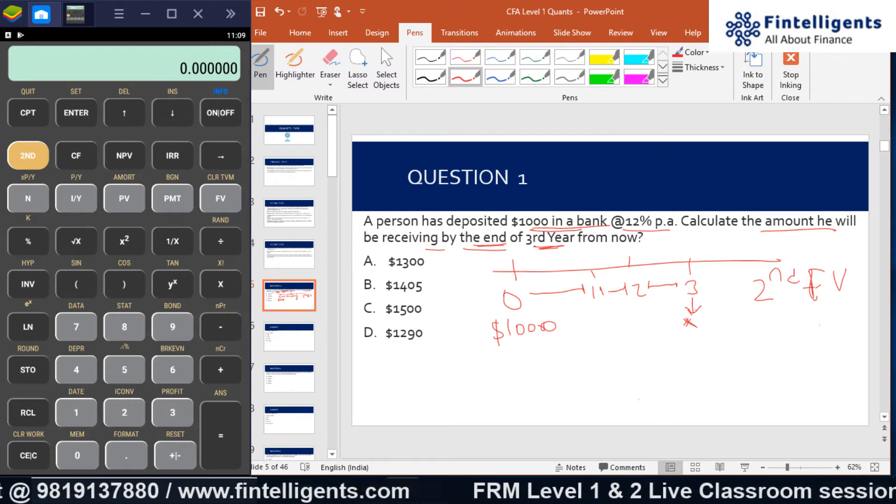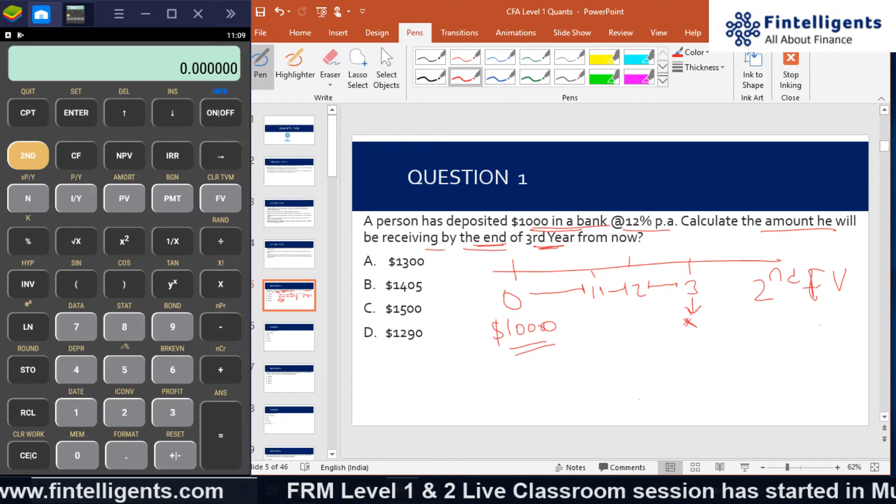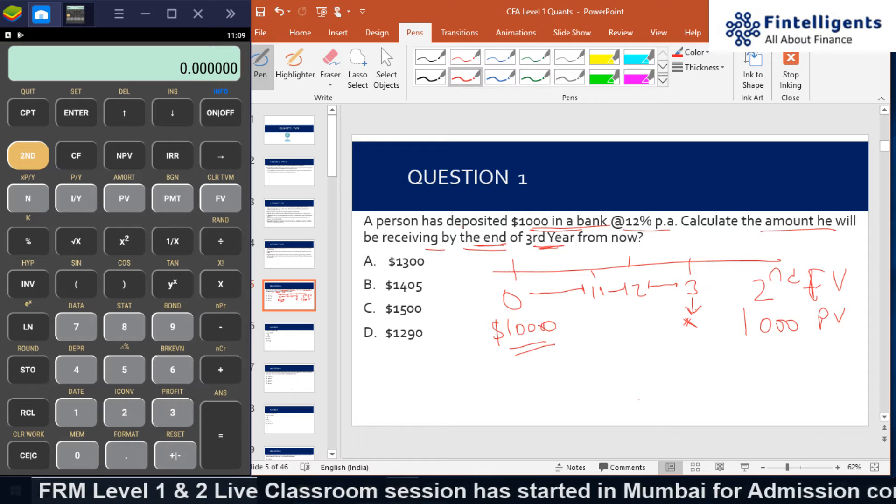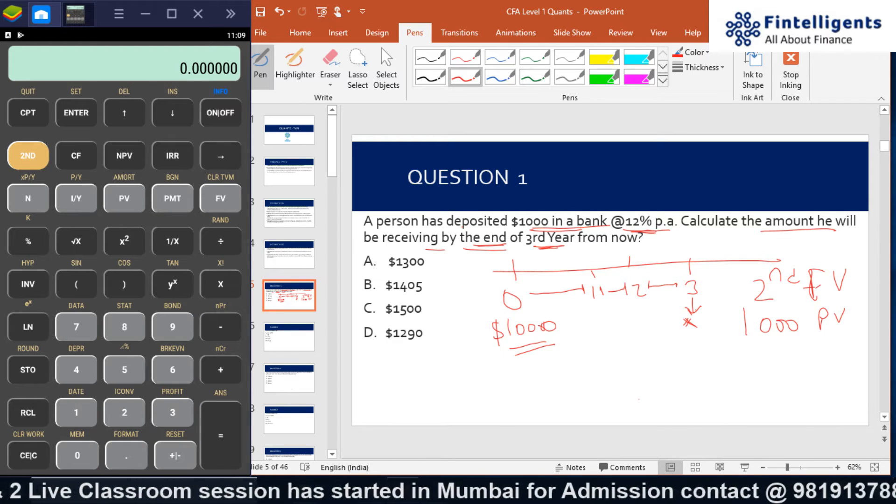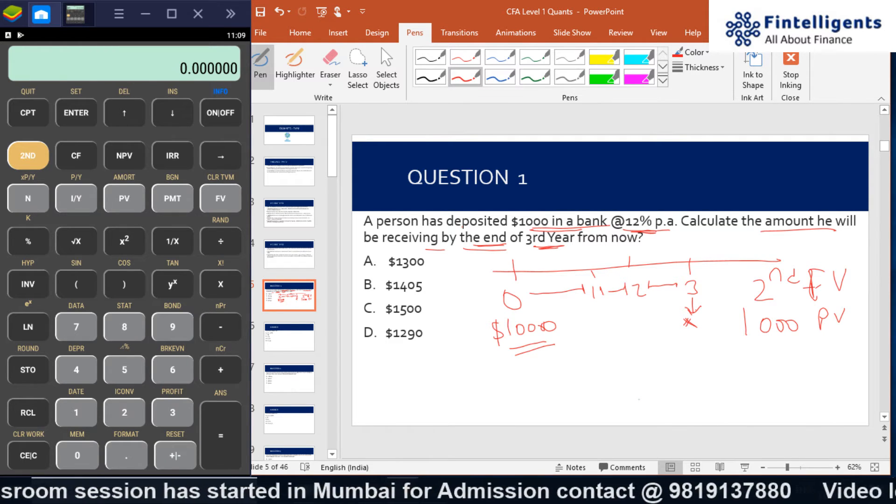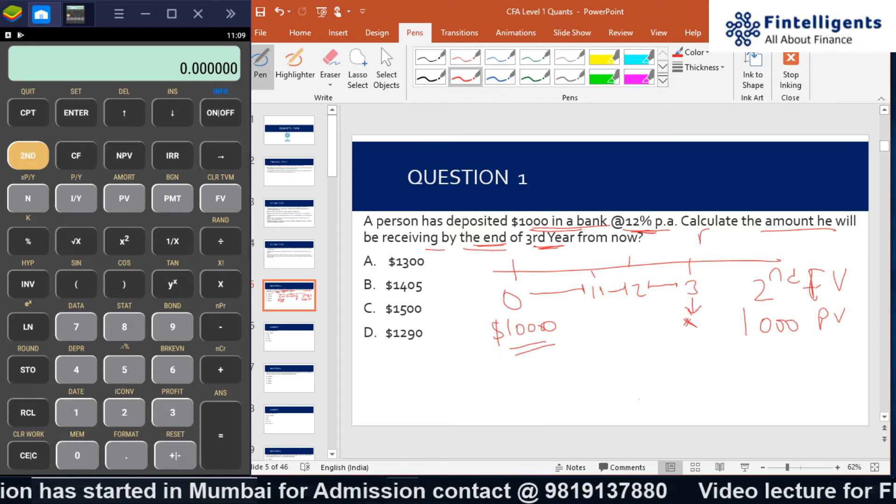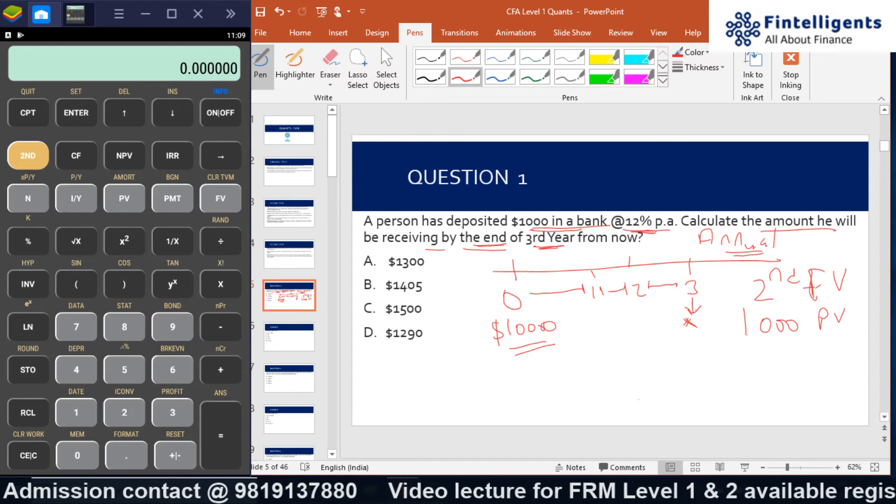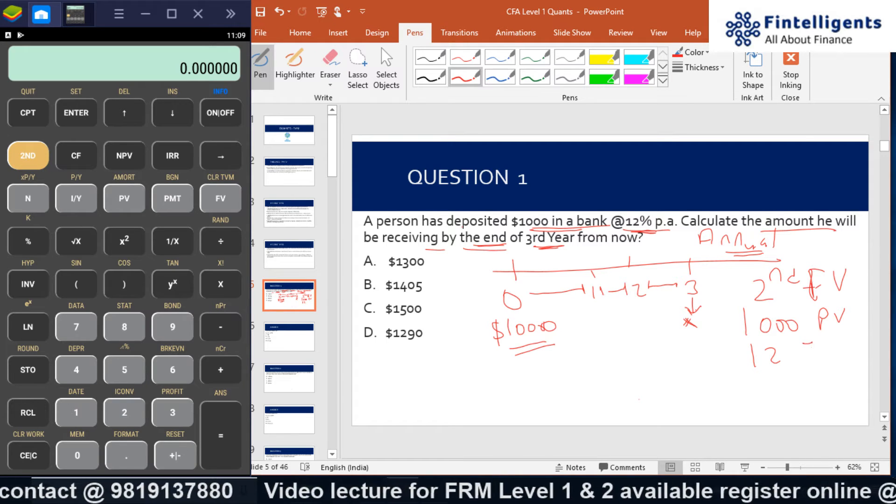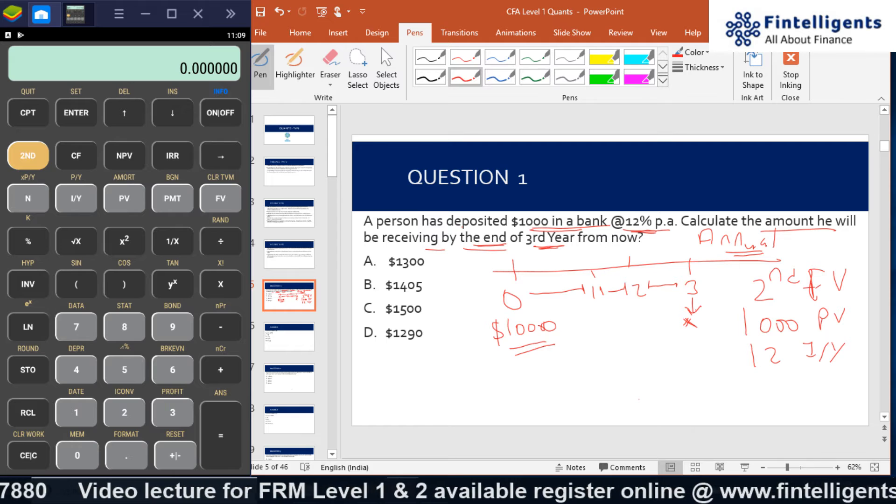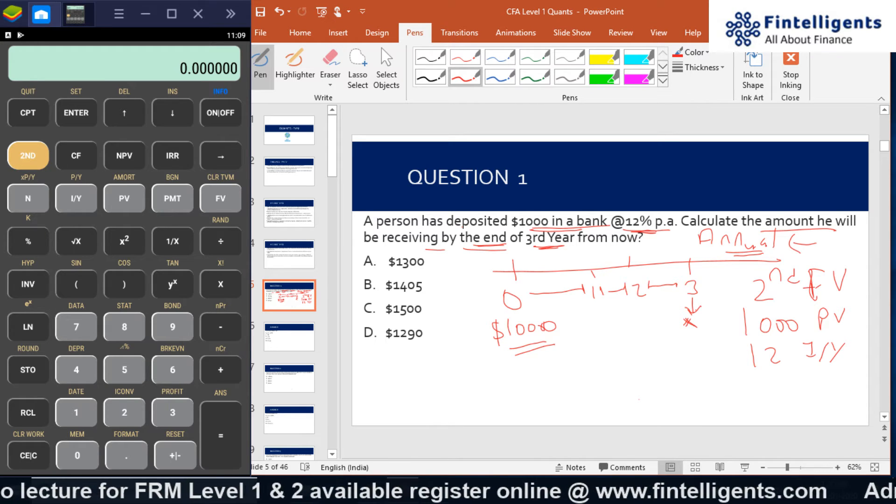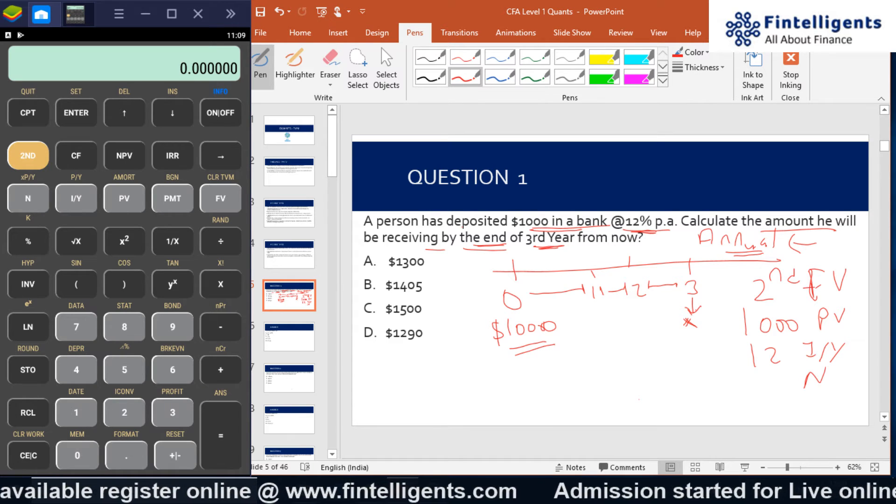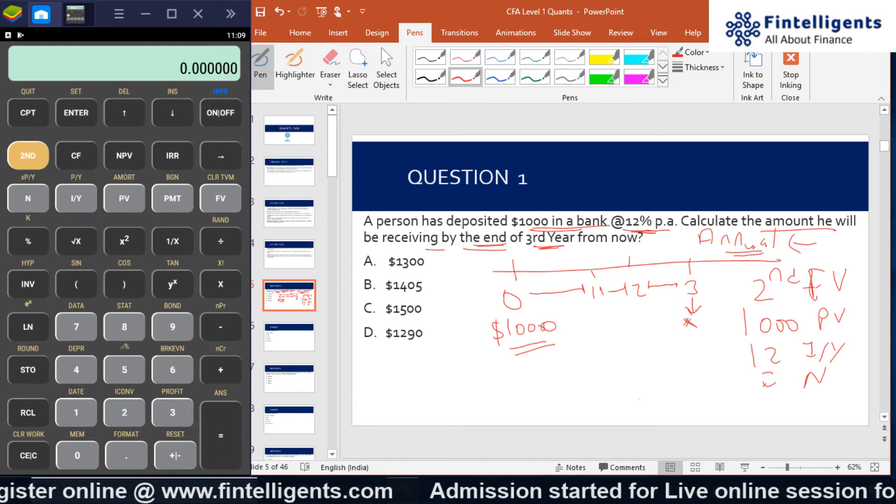In this calculation we have $1000 as present value, so we will put $1000 as PV. We have 12% per annum, and we know this is annual compounding because nothing has been mentioned about it. So we will write 12 I/Y. If this wouldn't have been annual compounding, your I/Y and N would have changed. With respect to N, it has completed entire three years, so N will be 3, and we will compute for FV.